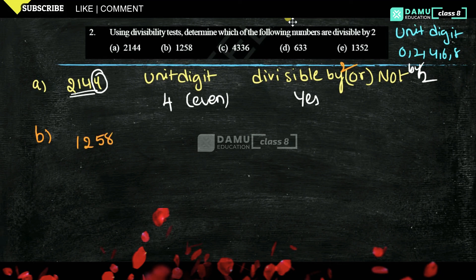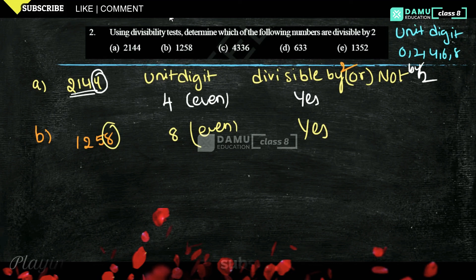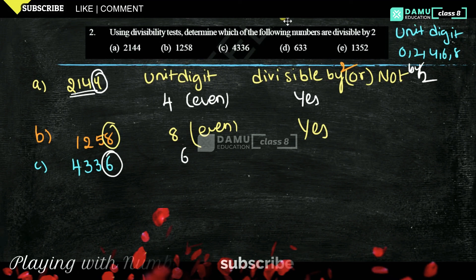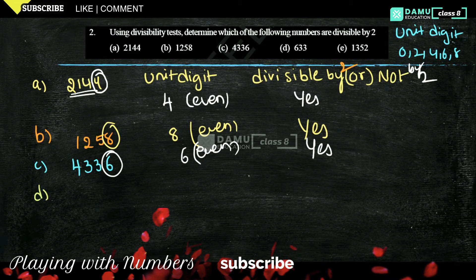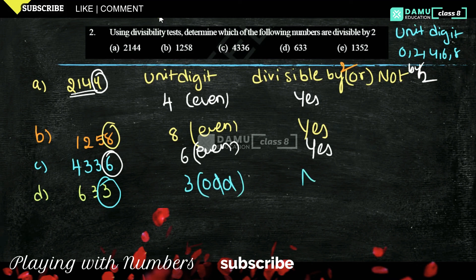Next is 1258. The unit digit is 8, which is even, so yes it is divisible by 2. Next is 4336 — unit digit is 6, it is even, so yes it is divisible by 2. Next is 633 — the unit digit is 3, it is odd, so it is not divisible by 2.